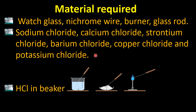We called it a beaker because it has a beak — like this — to pour the material. You have to memorize all these names. I have also shown you the pictures so you can easily memorize them: this is a beaker, this is a watch glass, this is a burner, and this is the glass rod with the nichrome wire.